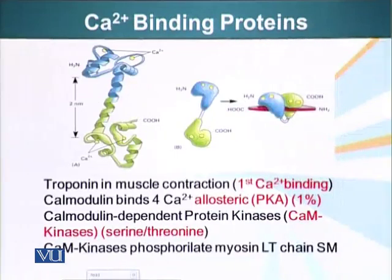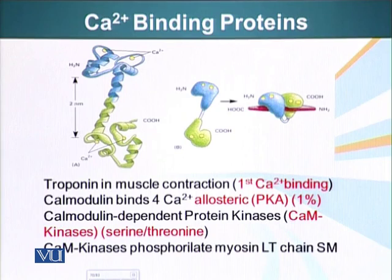There are special proteins in the cell that can bind calcium. The first calcium-binding protein that was discovered is troponin. Troponin is a protein that helps muscle contraction. There is another type of protein called calmodulin. This calmodulin protein binds four calcium ions.